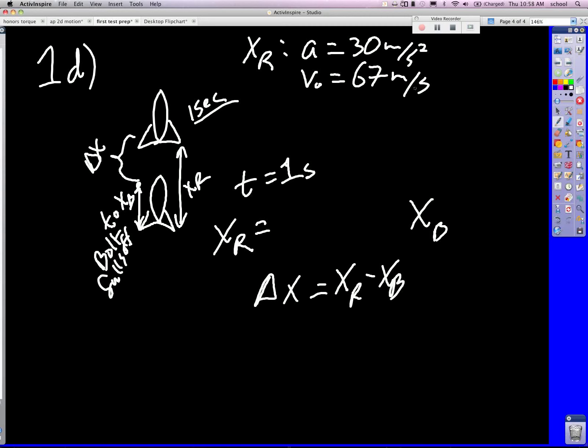So then I do the same equation. XB this time is going to be 67, again, with the one second. But now it's plus one half negative 10 times one squared. So basically I get 67 minus 5. And so I get 62 meters. So XR is 82 meters, XB is 62 meters. And their delta X is 20 meters. And bingo, that's it.